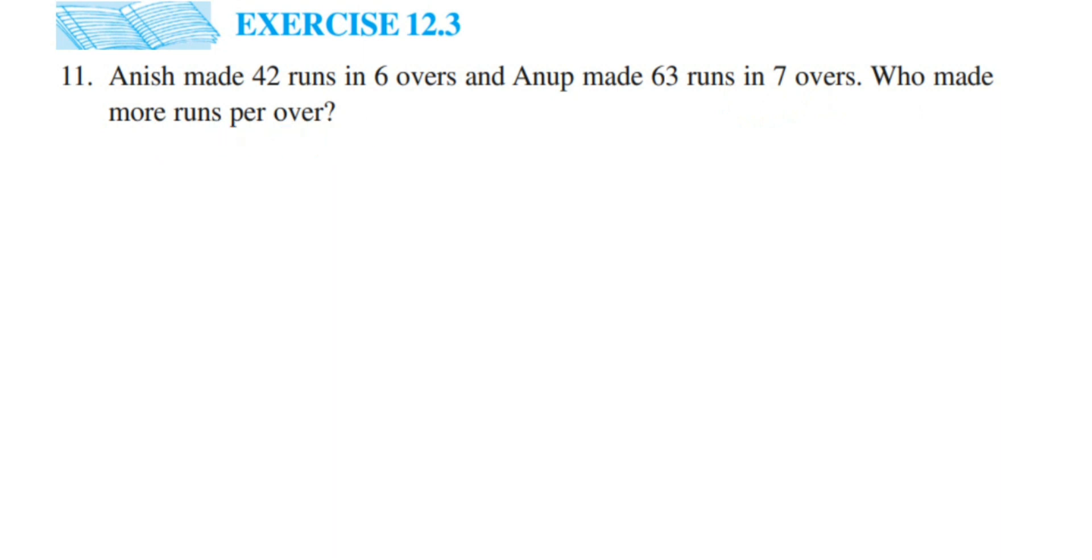So what is given, they are comparing two persons' scores here. Anish made 42 runs in 6 overs, whereas Anoop made 63 runs in 7 overs. So who made more runs per over?